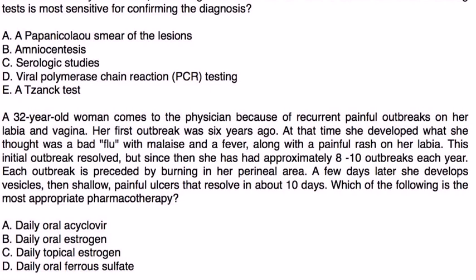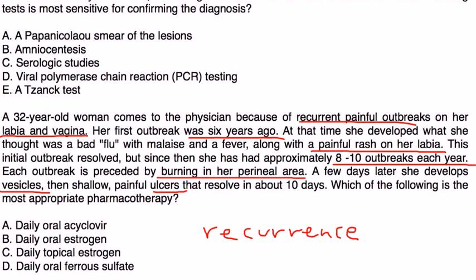Next question: a 32-year-old woman comes to the physician because of recurrent painful outbreaks on her labia and vagina. Her first outbreak was six years ago. At that time, she developed what she thought was a bad flu with malaise and fever along with a painful rash on her labia. This initial outbreak resolved, but since then she has had approximately eight to ten outbreaks a year. Each outbreak is preceded by burning in her perineal area. A few days later she develops vesicles and shallow painful ulcers that resolve in about ten days. Which of the following is the most appropriate pharmacotherapy? This clinical vignette illustrates the recurrent nature of herpes simplex. Unfortunately, there's no cure, but you can use an antiviral drug known as acyclovir and valacyclovir to shorten the duration of symptoms, and that would be choice A.